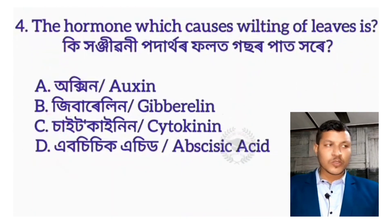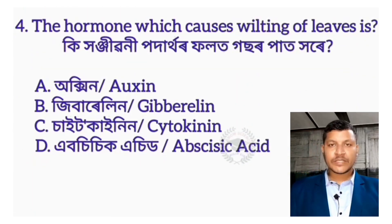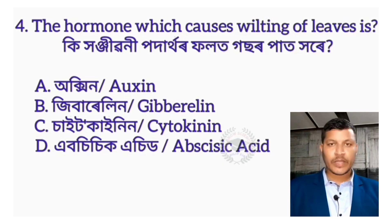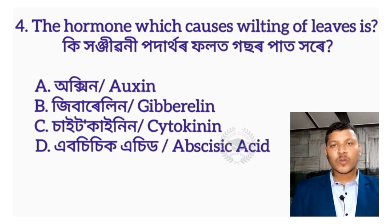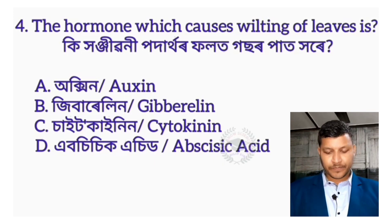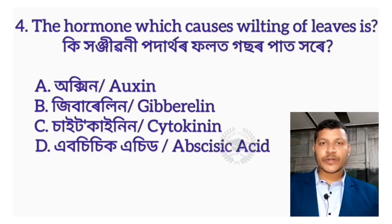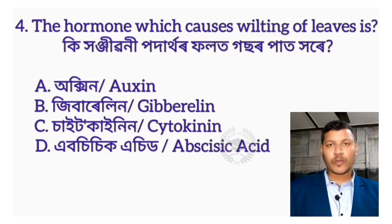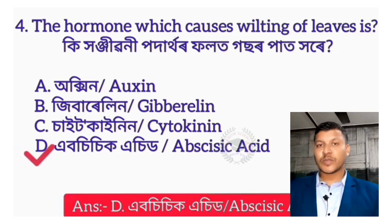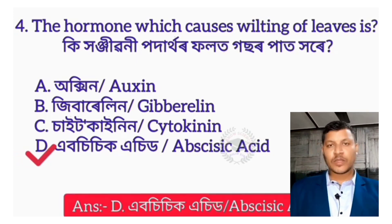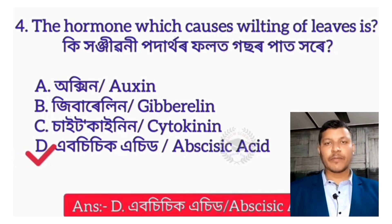The hormone which causes wilting of leaves — the answer is Abscisic Acid. That's Abscisic Acid. Now we get to the procedure.